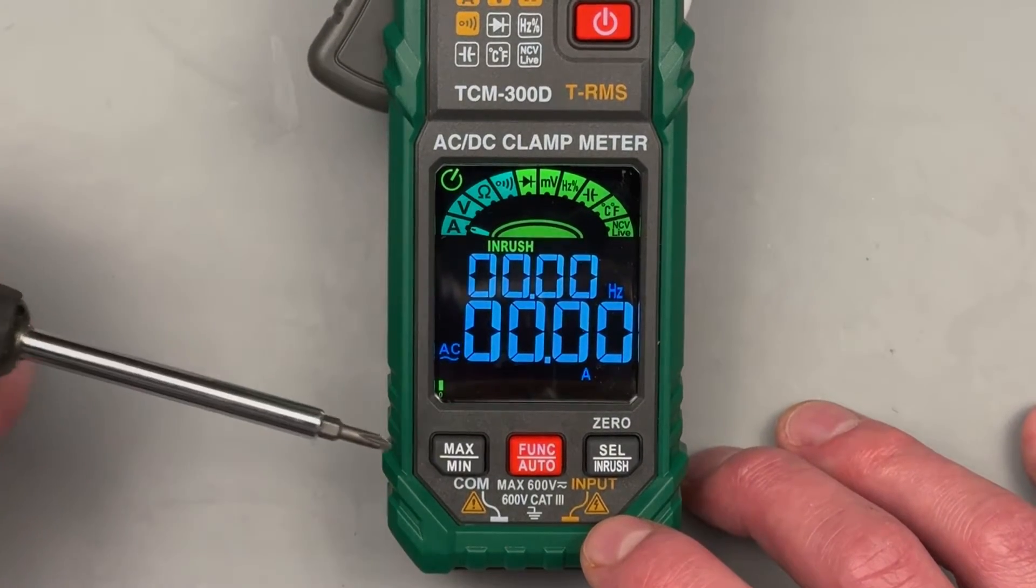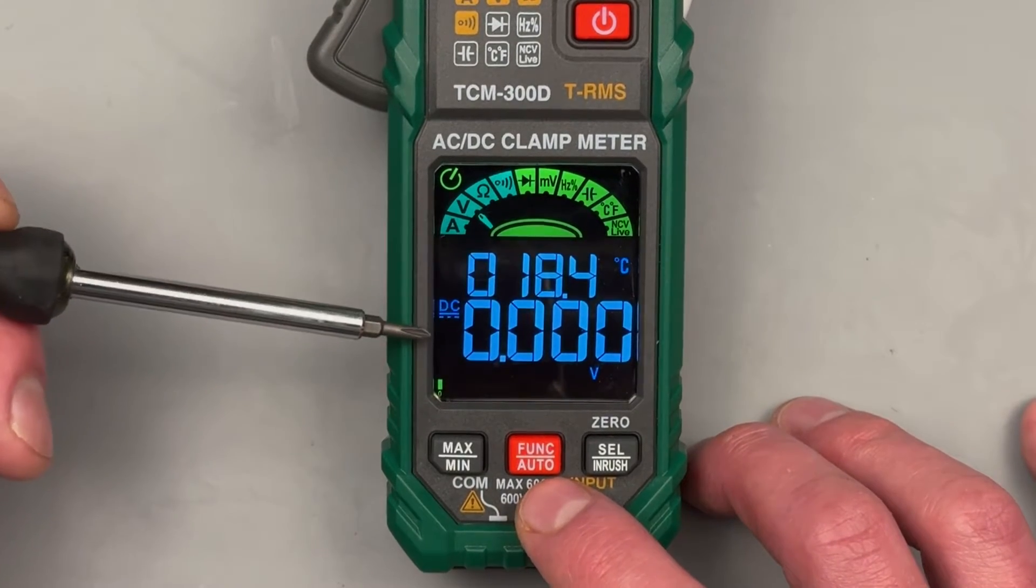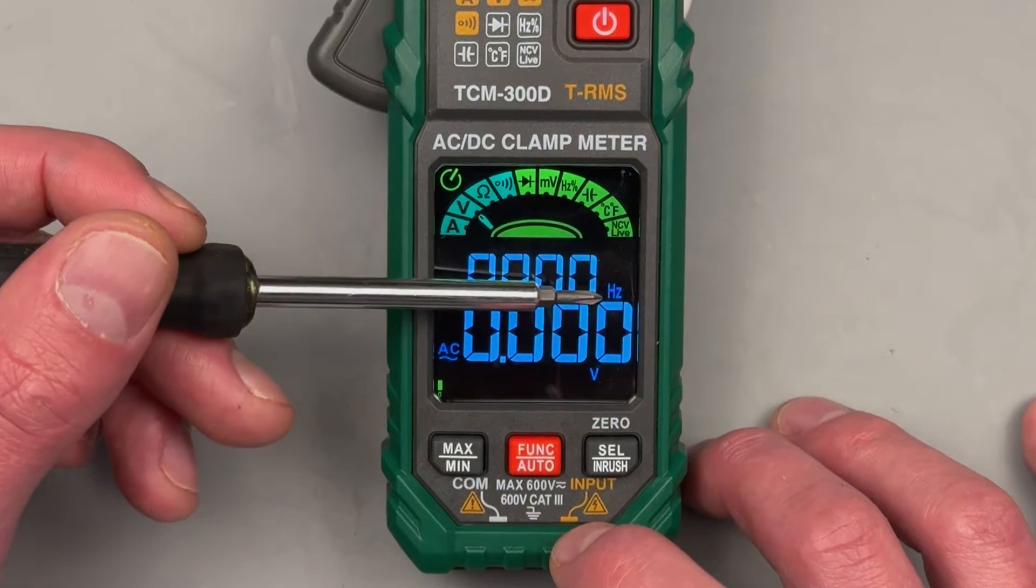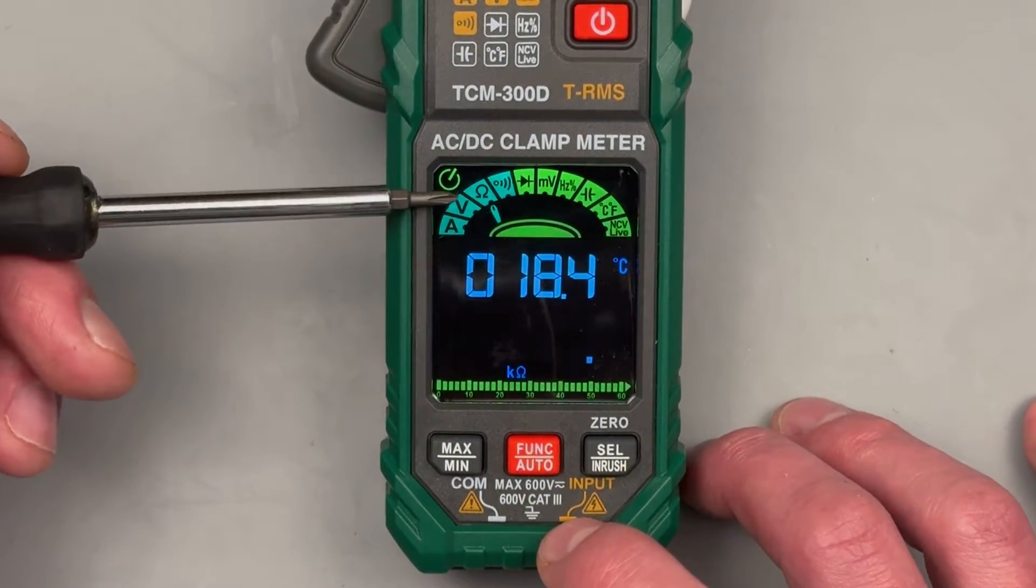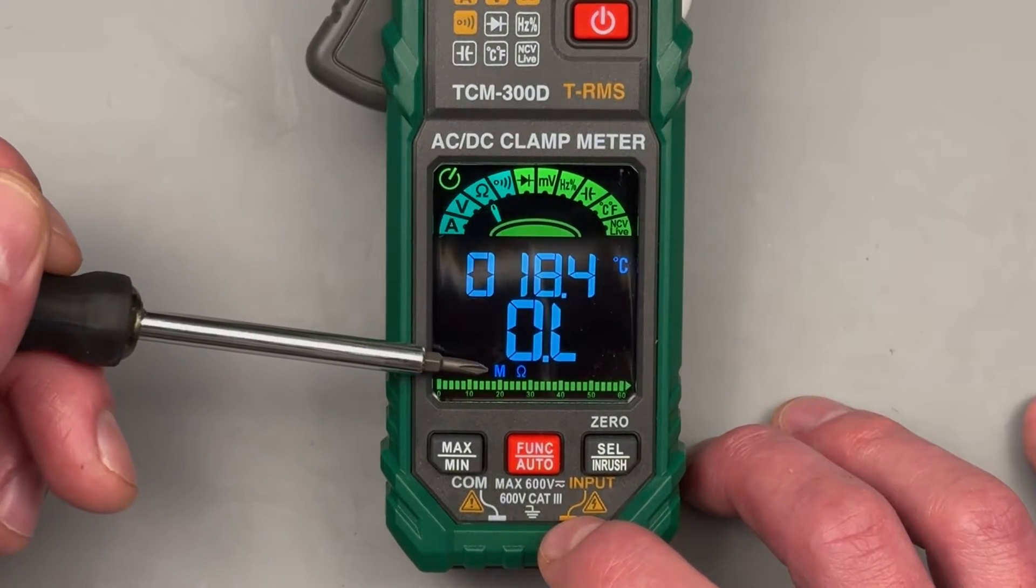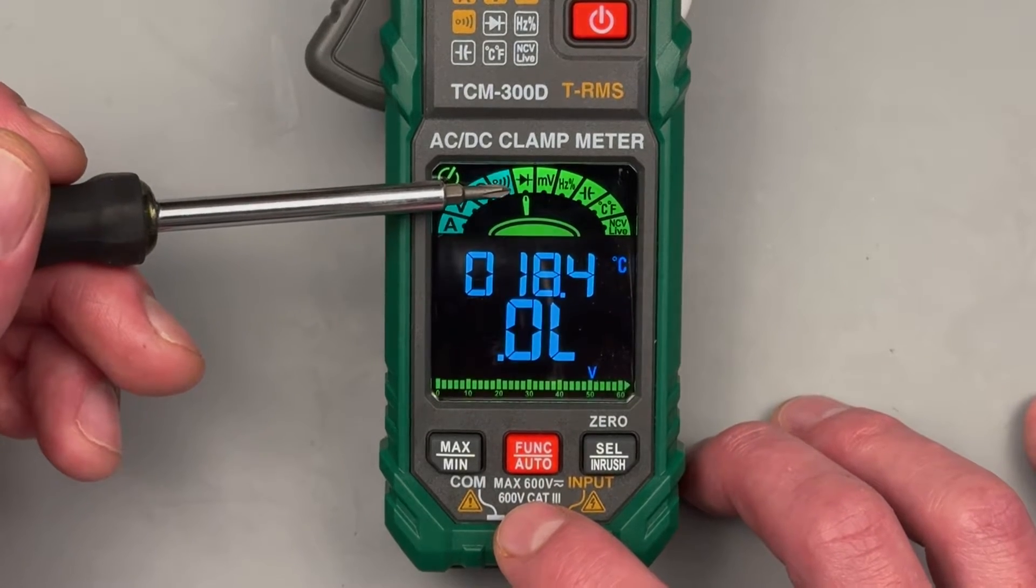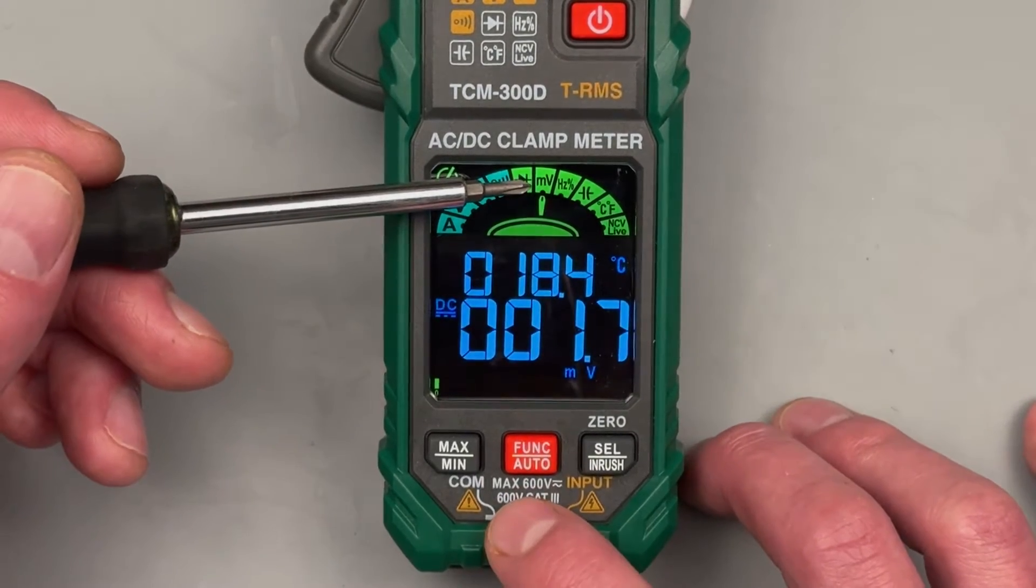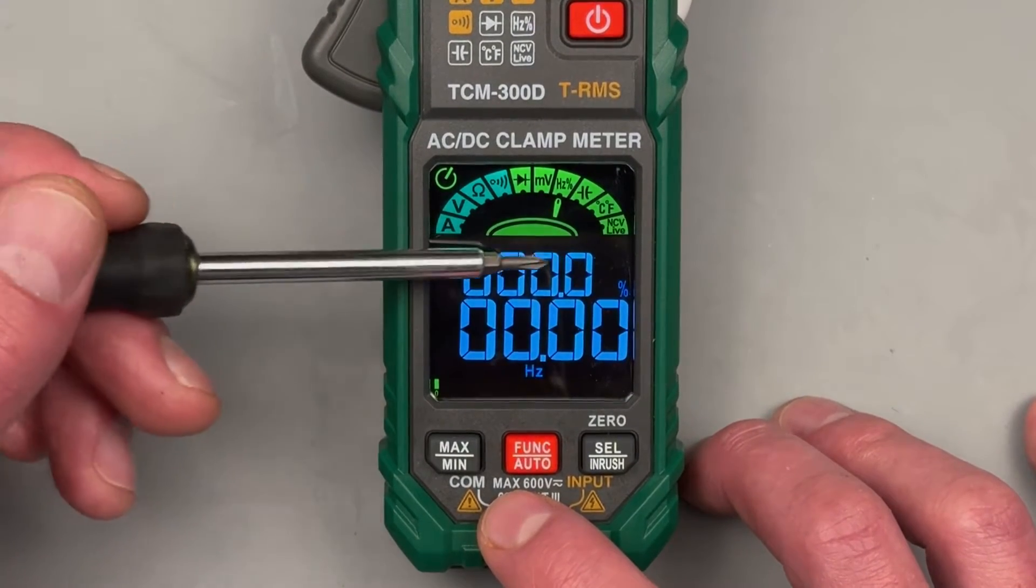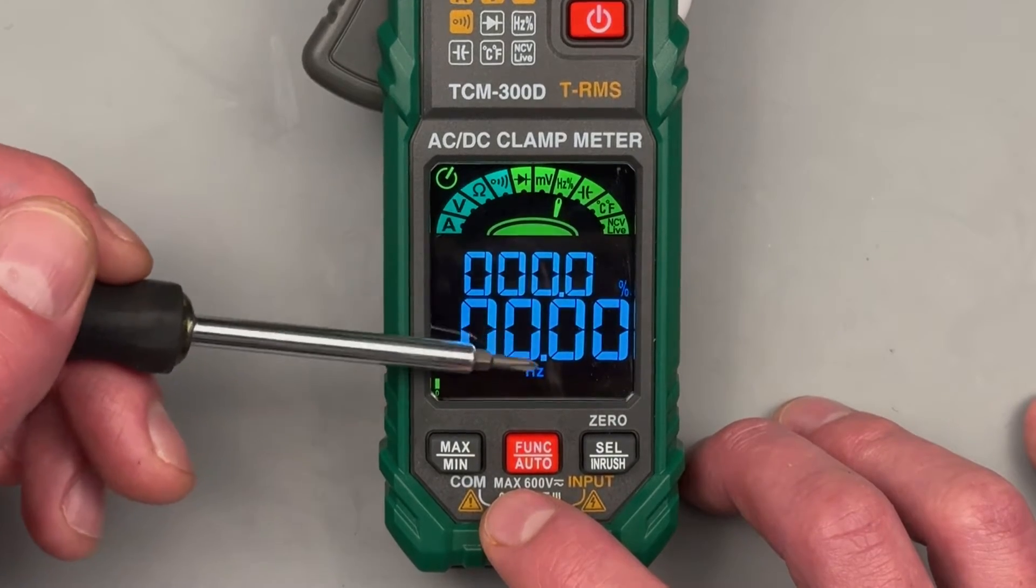Hit selection again, that'll bring us to an AC inrush current measurement. We can go to function, we'll go to volts DC. Hit that again, we're in volts AC. Change to hertz. Then we have ohms, auto-ranging in ohms from ohms to kilo ohms to mega ohms. We have our continuity setting, then we get to diodes.